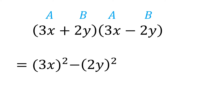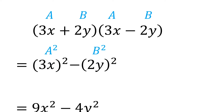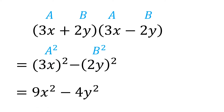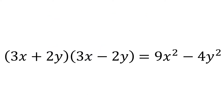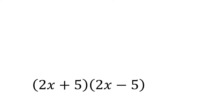which is equal to 9x squared minus 4y squared. So therefore, 3x plus 2y times 3x minus 2y is equal to 9x squared minus 4y squared.